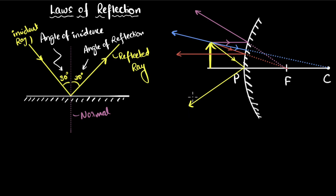With all four rays drawn for the convex mirror, notice they all appear to diverge from each other — they won't meet on this side. Retracing them back, they all appear to come from one single point. The image is inside the mirror between P and F. It is diminished — smaller than the object — and erect, which means it's a virtual image that cannot be captured on a screen.